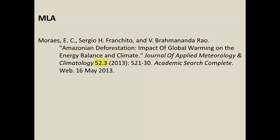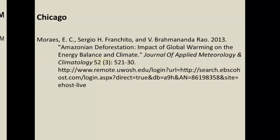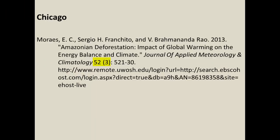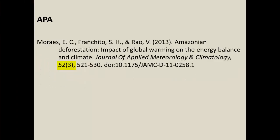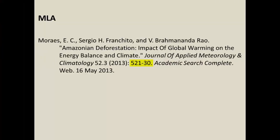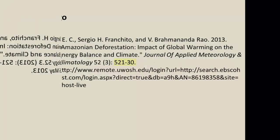Appearing after the journal title is the volume number and the issue number. While the citation styles treat these slightly differently, you'll notice that in all three cases the volume — 52 — appears to the left of the issue — 3. Finally, there is the page range. In most cases, you'll always find the page range of an article at the end of a citation, as it is in these examples: pages 521 to 530.